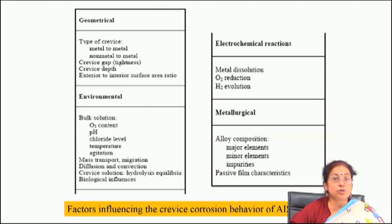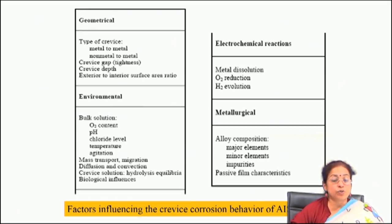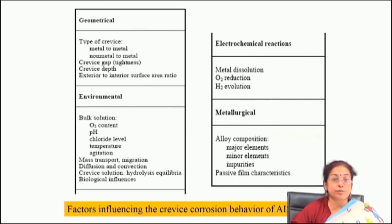As you increase depth or proceed towards the interior, the attack rate increases, because on the surface the attack rate is lower due to exposure to the environment and oxide layer formation. As you proceed towards the depth, there is less oxygen supply and a greater tendency for crevice corrosion. The exterior-to-interior surface area ratio is also critical — higher anode-to-cathode ratio leads to lower crevice attack, while a smaller anode-to-cathode ratio leads to higher crevice attack.